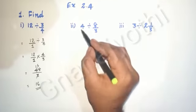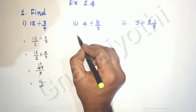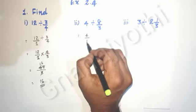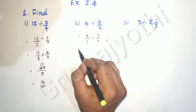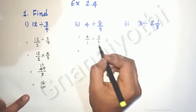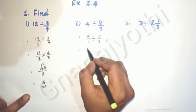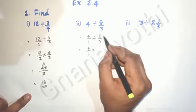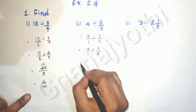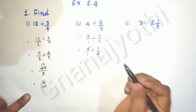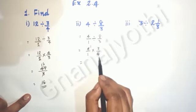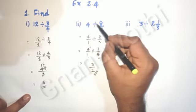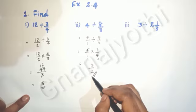Now let us see the second question: 4 divided by 8/3. It has no denominator, so we write denominator as 1: 4/1 divided by 8/3. Let us reciprocal — the division symbol becomes multiplication, and 8/3 becomes 3/8. Multiplying numerator into numerator, denominator into denominator: 4 × 3 = 12 and simplifying, 1 × 8 gives us 2 in the denominator. We get the result 3/2.